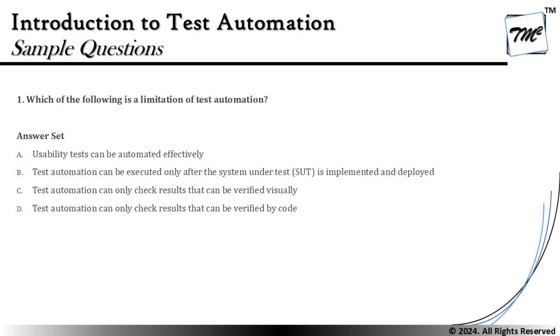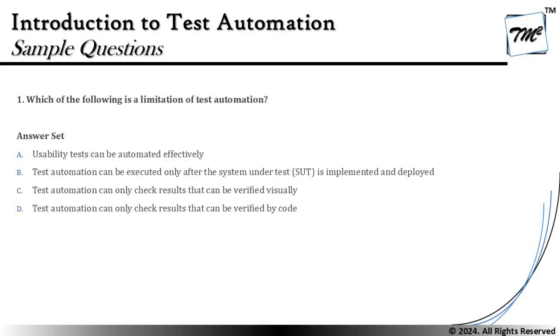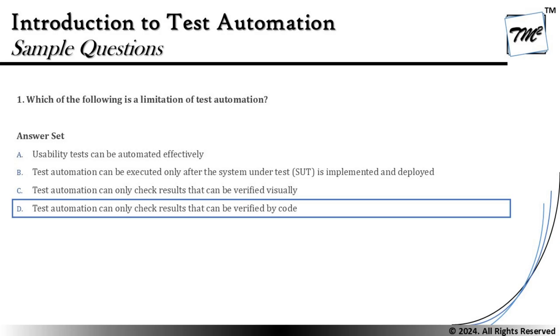Option D says: test automation can only check results that can be verified by code. This goes with the clarification against Option C's conflicts — Option D is more relevant. The right answer to this question is D: test automation checks results verifiable by code, always comparing inputs versus outputs with respect to the script written. It is all about having knowledge of the content and concepts covered.